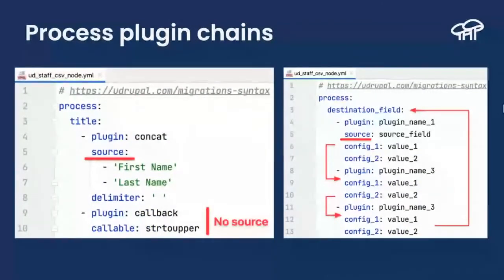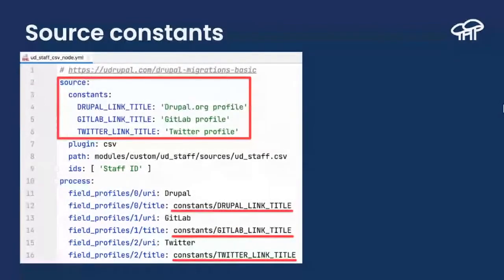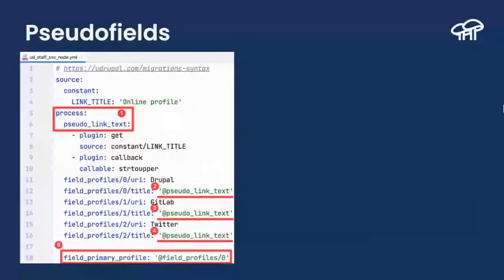Another thing you need to be aware of is process plugin chains. The output of one process plugin becomes the input of the next one, and at the end of the chain, whatever the end result is, it is going to be assigned to the destination field. Something that will also be helpful in some circumstances are what are called source constants and pseudofields.